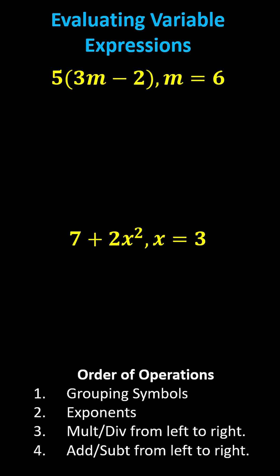We begin by substituting six for m. Recall three m means three times m, and therefore the expression is five times the quantity in parentheses three times six minus two. Now we simplify using the order of operations. Inside the parentheses we have multiplication and subtraction. We always multiply and divide before we add and subtract.